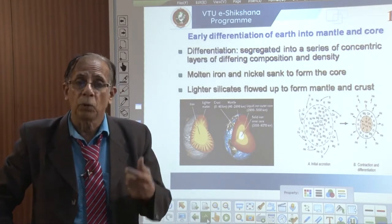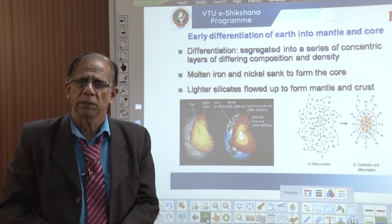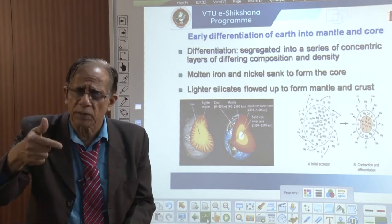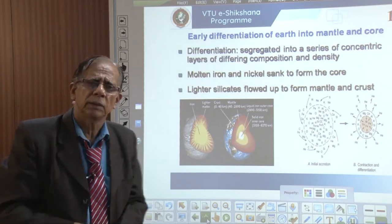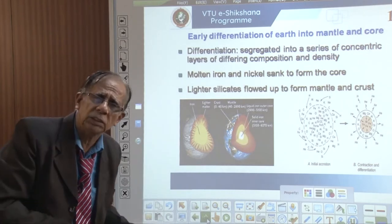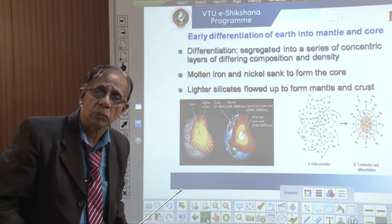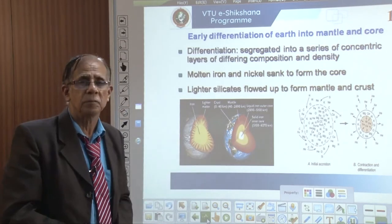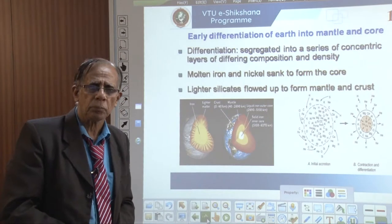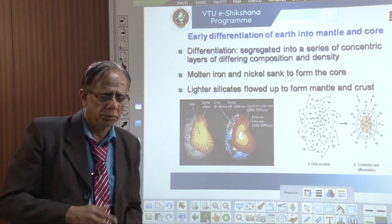From a molten stage, if differentiation has taken place, this must be the structure. Yes, the earth must be like this — denser material in the core and lighter material on the outside.